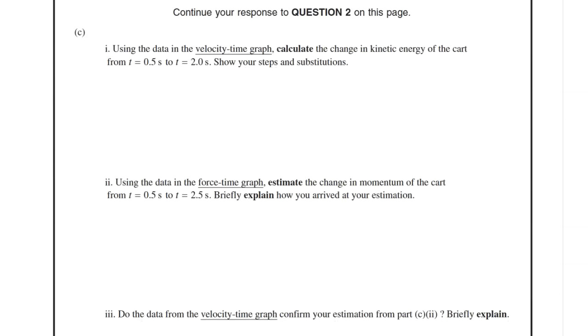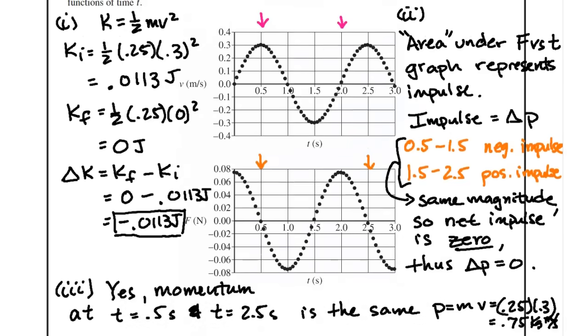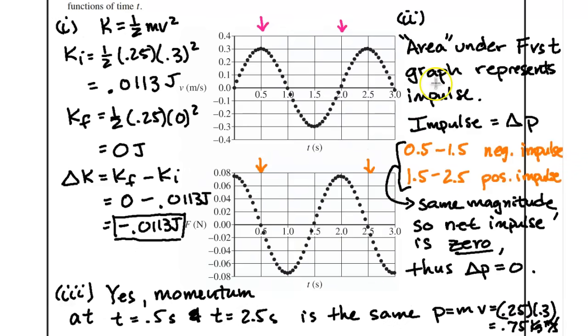Moving on to 2i. Using the data in the force time graph, state the change in momentum of the cart from 0.5 seconds to 2.5 seconds. Briefly explain how you arrived at your estimation. So now we're looking at the force-versus-time graph. Here we need to remember that the area under the force-versus-time graph represents the impulse. I put area in quotes because the area could be above the graph. So really, it's between the graph and the x-axis. That's what I'm looking at. And also, we know that from the impulse-momentum theorem that the impulse is equal to the change in momentum. And from 0.5 to 1.5 seconds, we have a negative impulse because this area is in the negative area. And then 1.5 to 2.5, we have a positive impulse. They have the same magnitude. You can see the shape and the area is the same. So the net impulse is 0. Thus, the change in momentum is 0.